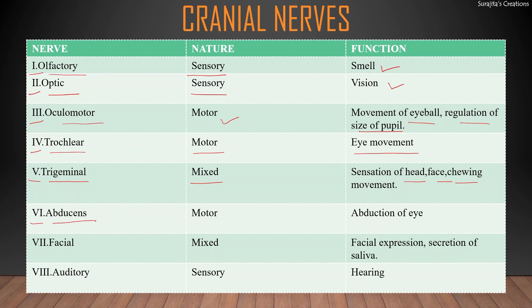The sixth cranial nerve is the abducens nerve; it is a motor nerve responsible for the abduction of the eye, meaning drawing the eye away from the midline. The seventh cranial nerve is the facial nerve; it is a mixed nerve responsible for facial expression as it stimulates the muscles of the face, and also responsible for the secretion of saliva as it stimulates the salivary glands.